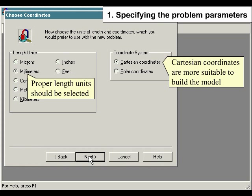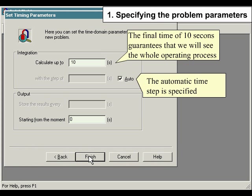Proper length units should be selected. Cartesian coordinates are more suitable to build the model. A final time of 10 seconds guarantees that we will see the whole operating process. The automatic time step is specified.